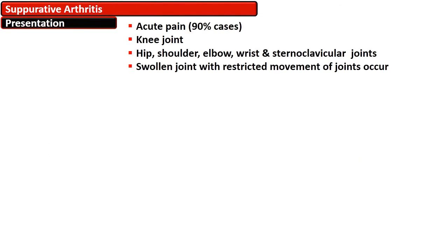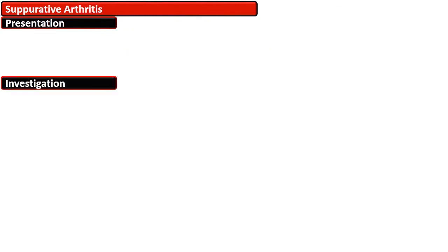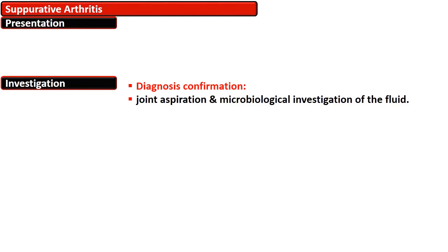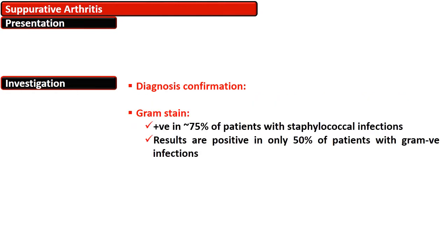More than 90% of cases present with acute pain, and the knee joint is most commonly affected, though the hip, shoulder, elbow, wrist, and sternoclavicular joints are also involved. The joint is typically swollen with restricted movement. For diagnosis, joint aspirate and microbial investigation of the fluid are necessary.